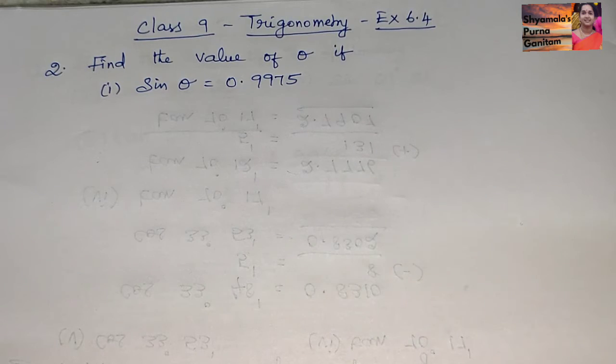So for that we will find out for which value of theta, for which degree of theta, we are getting 0.9975. For that we will take the trigonometric tables and check where we are getting this 0.9975.